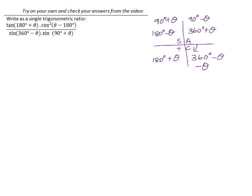So if we make a start here. Tan of 180 plus places us in the third quadrant where tan is positive. So that will become positive tan theta.